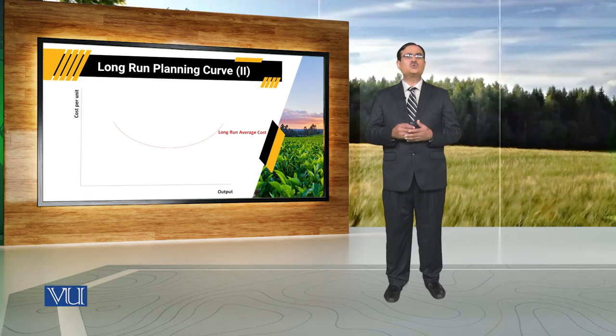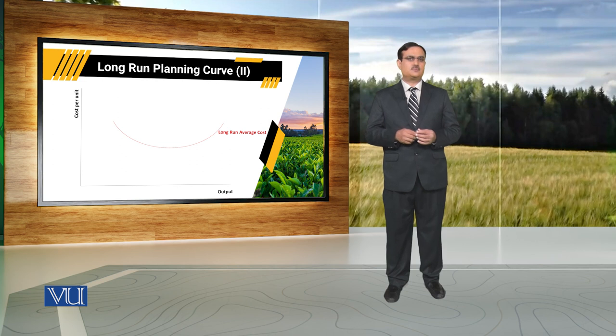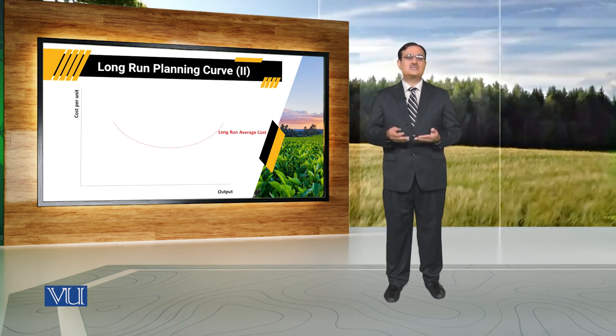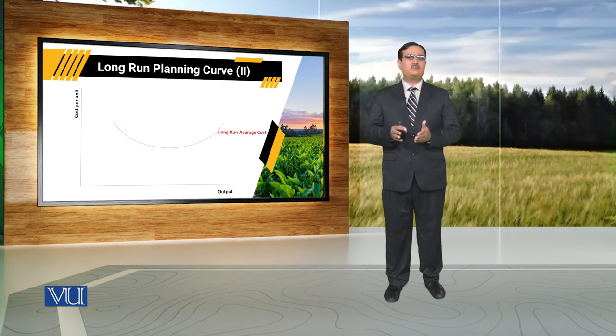जब हम कहते हैं long run average cost is decreasing, तो इसके पीछे क्या होता है — this is because of different returns to scale. यह U-shape of the long run average cost curve is because of different returns to scale under which a farmer is making production. Returns to scale is basically an association between output and input. Long run में हमारी assumption क्या है कि all inputs are variable inputs, there is no fixed factor of production. If there is proportional increase in all inputs, there is some proportional impact on output. This proportional association between input and output is called returns to scale.